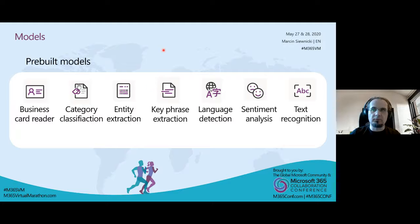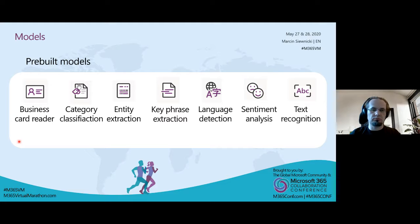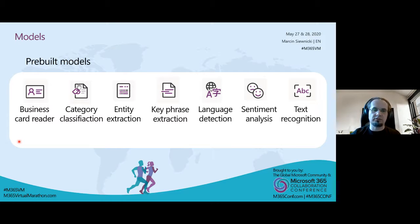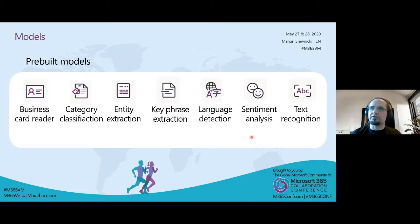The seven pre-built models are: business card reader — ready to use, scan and analyze business cards; category classification with predefined training; entity extraction; key phrase extraction — reads text and extracts key phrases to understand meaning; language detection — analyzes text and returns the language; sentiment analysis — detects sentiment for specific text; and text recognition — essentially OCR that recognizes text from pictures or photos.